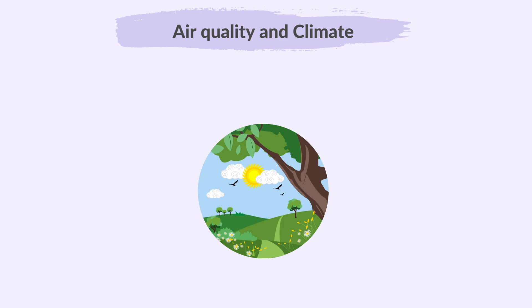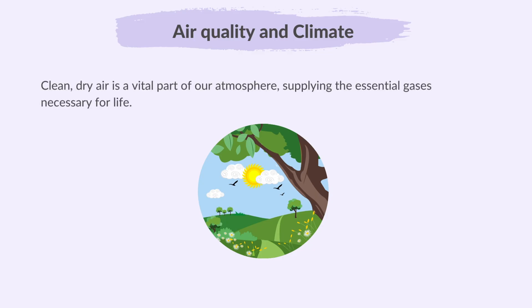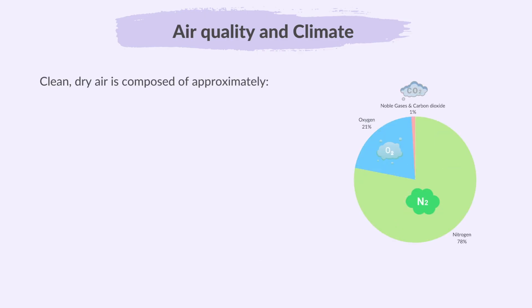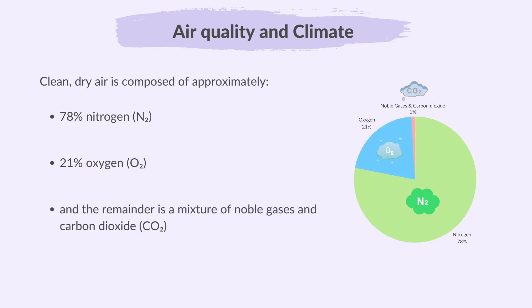First, let's delve into the topic of air quality and climate. Clean dry air is a vital part of our atmosphere, supplying the essential gases necessary for life. Clean dry air is composed of approximately 78% nitrogen, 21% oxygen, and the remainder is a mixture of noble gases such as argon, neon, and helium, and carbon dioxide.